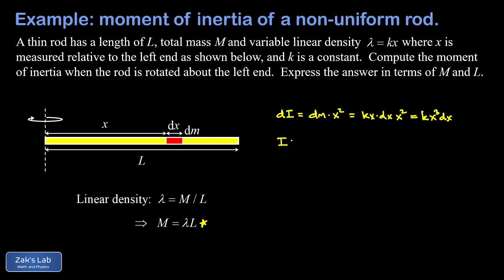So now we use integration to add up all of these contributions. So I'm going to say I, the total moment of inertia is the sum of all the contributions. Those are called dI's. And so plugging in our expression for dI, we have the integral of kx cubed dx. And we're adding all these up from the left end of the rod to the right. And as we do that, x goes from zero to big L.